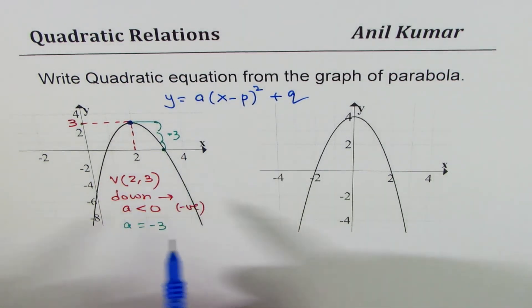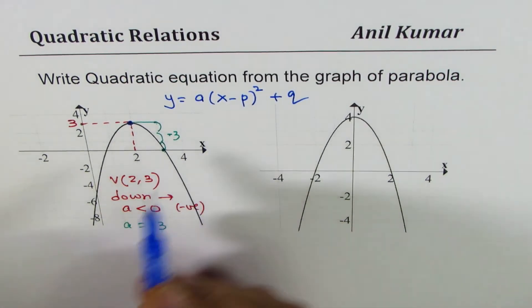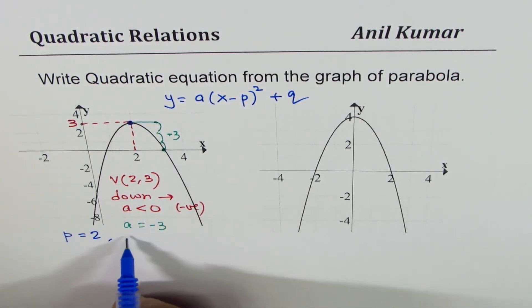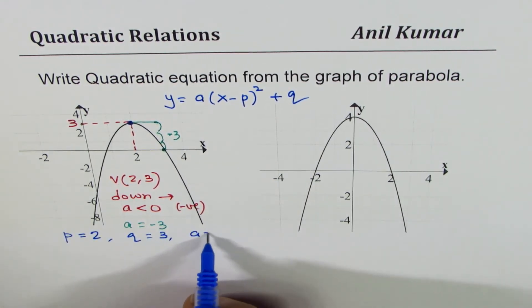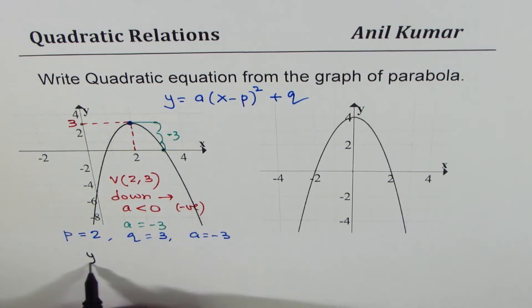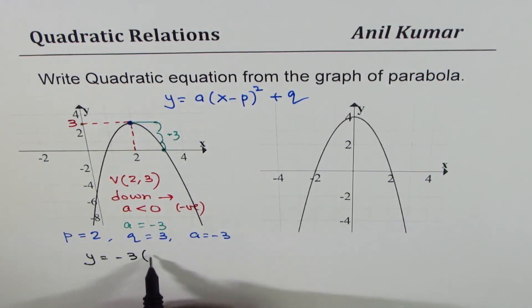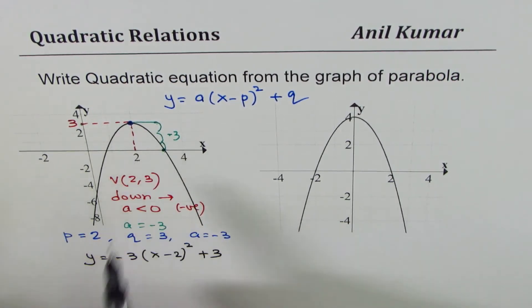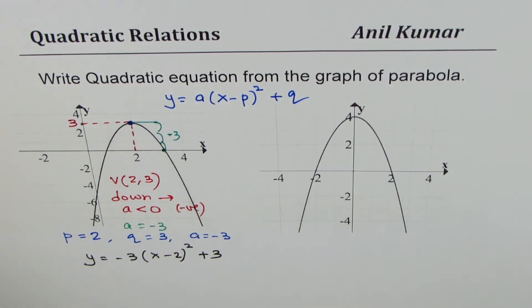So what we have is in the given equation, P equals the x value of 2, Q equals 3 and A equals minus 3. And we can write down our equation as y equals to minus 3 x minus 2 whole square plus 3. So this minus 3 is because of 3 steps down, 2, 3 is the vertex coordinate.